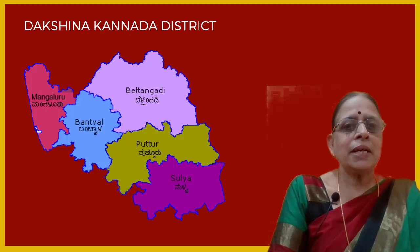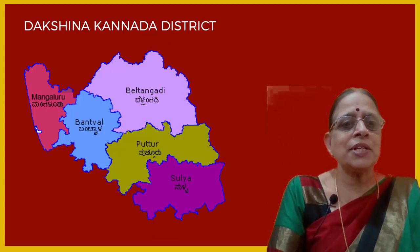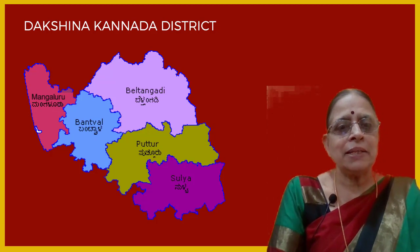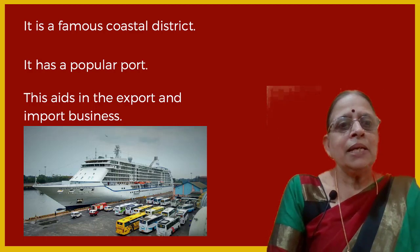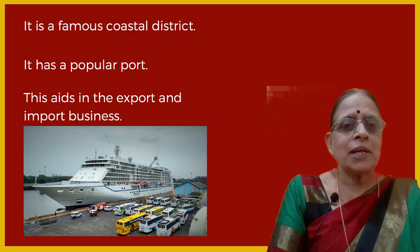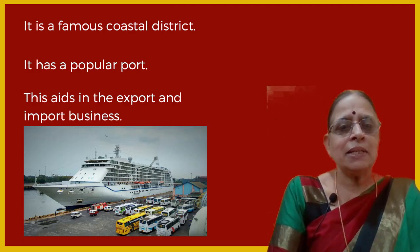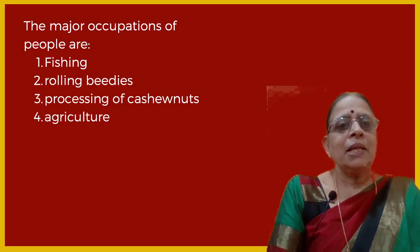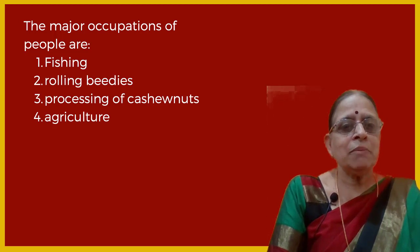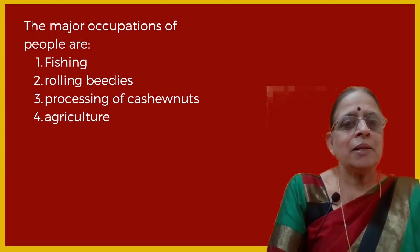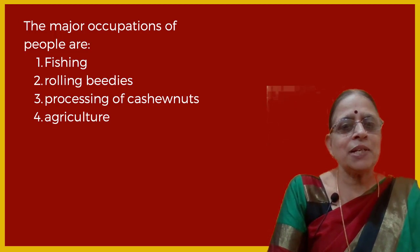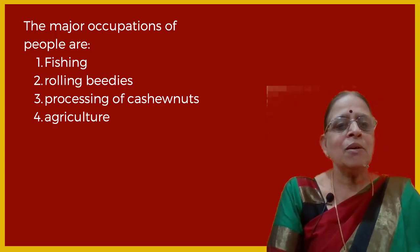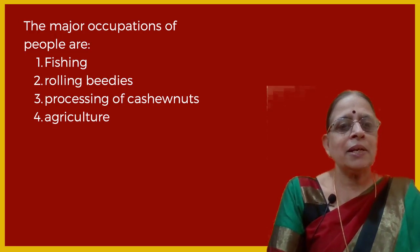Let us move on to Dakshinakannada district. Dakshinakannada district has the taluks: Mangaluru, Bantwala, Belthangadi, Putturu and Sulya. It is a famous coastal district with a popular port, which helps in export and import business. The major occupations of people are fishing, rolling beedis, processing of cashew nets and agriculture — these are the four major occupations of Dakshinakannada people.